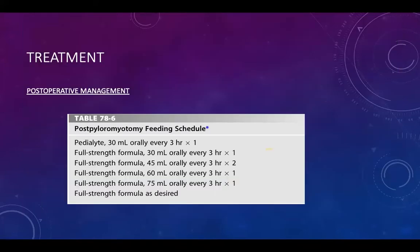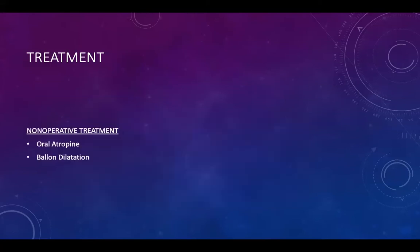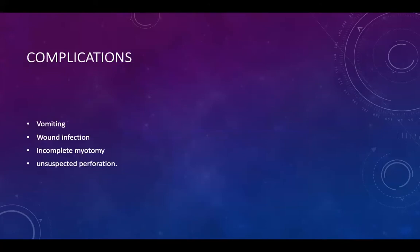Post-operatively, feeding can be initiated after four to six hours, starting with Pedialyte, then gradually starting formula from 30 ml up to ad-lib feeding. Non-operative options such as oral atropine or balloon dilatation exist but are almost obsolete and not as effective as Ramstedt. Complications include persistent vomiting from gastritis or gastric atony, wound infection, incomplete myotomy, and unsuspected perforation. If vomiting persists for more than one week, re-exploration may be indicated.